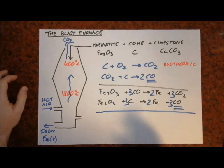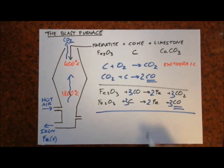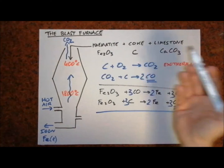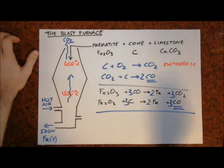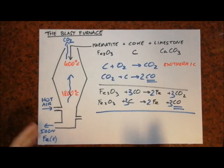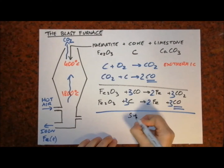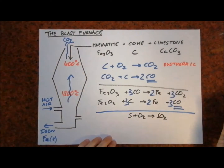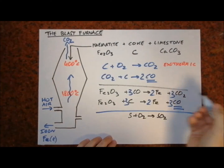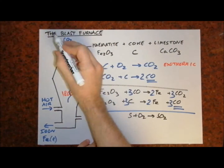The next step is to remove the impurities that were present in the original iron ore, the hematite. An impurity such as sulfur reacts with the hot air to form sulfur dioxide. Sulfur dioxide is a gas at room temperature, so it also leaves the blast furnace along with the carbon dioxide.